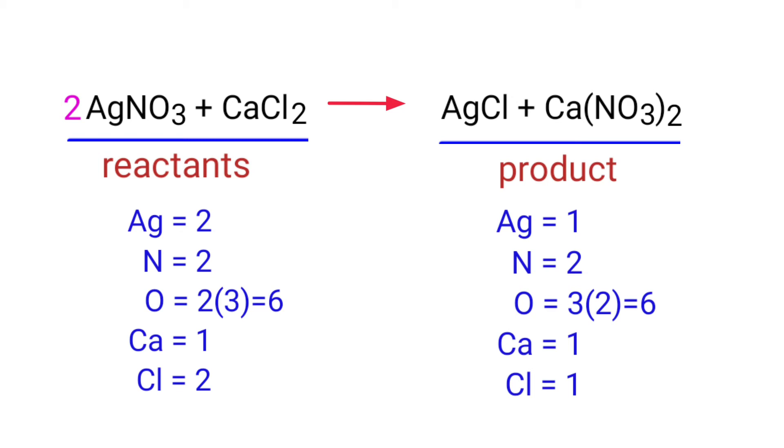Now we need to balance the silver and chlorine atoms. To do this we need to put a coefficient of two in front of AgCl.